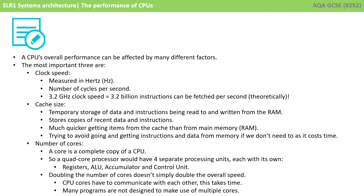Let's recap what we've covered. A CPU's overall performance can be affected by many different factors. The most important are: clock speed, measured in hertz — the number of cycles per second; cache size — a temporary storage of data and instructions being read from and written to memory, storing copies of recent data and instructions, which is much quicker to access than main memory; and the number of cores — a core is a complete copy of the CPU, so a quad core processor has four separate processing units, each with its own registers, accumulators, ALU, and control unit. Remember that doubling the number of cores doesn't simply double the overall speed, as cores need to communicate with each other, and many programs are not designed to make use of multiple cores.